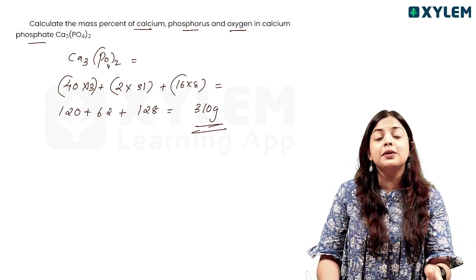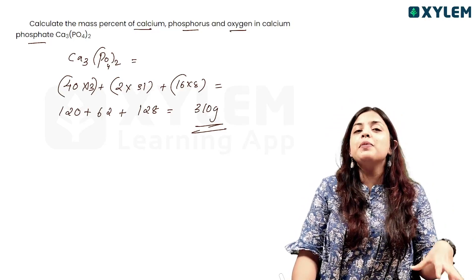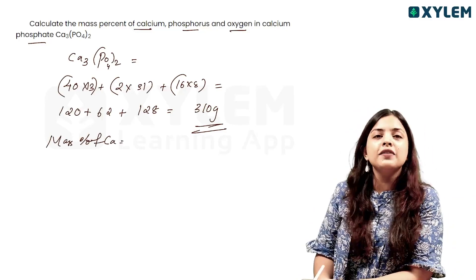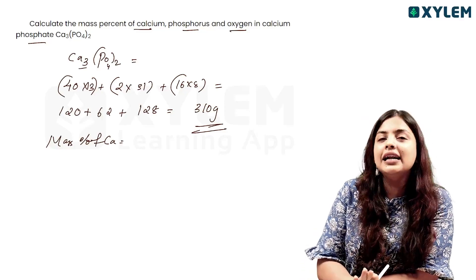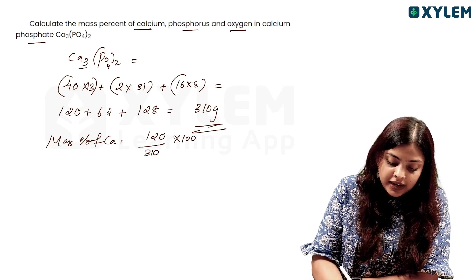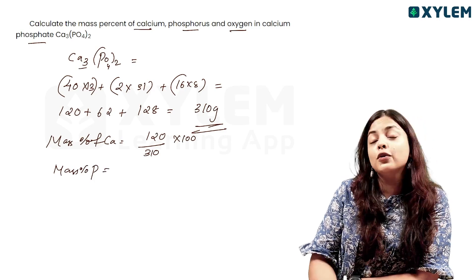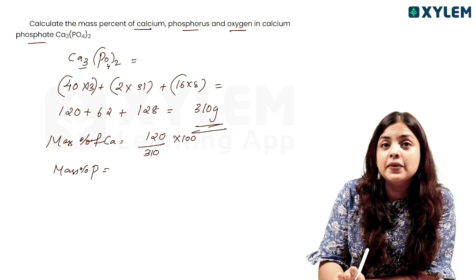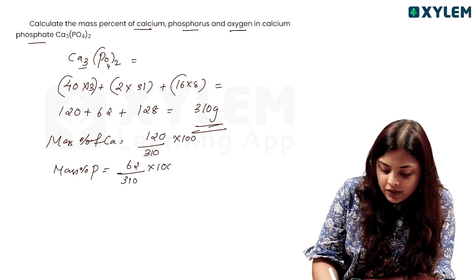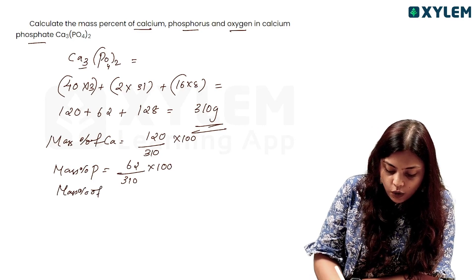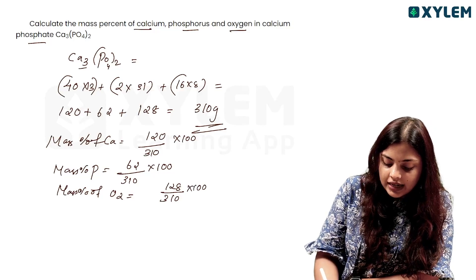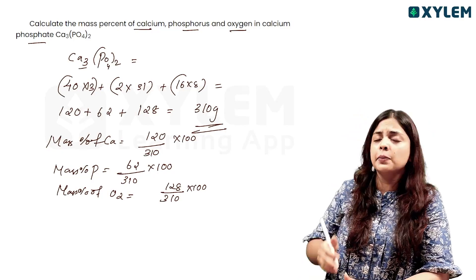Mass percentage of calcium = 120 divided by 310 into 100. Mass percentage of phosphorus = 62 divided by 310 into 100. Mass percentage of oxygen = 128 divided by 310 into 100. This is the answer. We have 3 marks for this question.